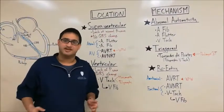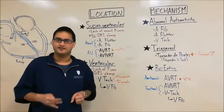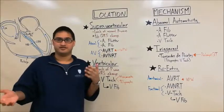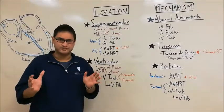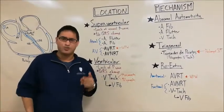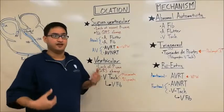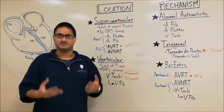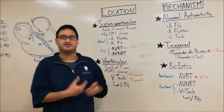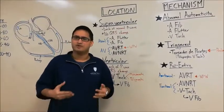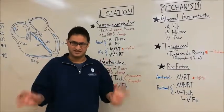So now that we discussed normal conduction in the heart, let's talk about abnormal conduction in the heart. Arrhythmias. So there's two overall schemes to classifying arrhythmias. We can classify arrhythmias by the location of the arrhythmia, the location where the impulse is generated. Or we can classify arrhythmias by the mechanism by which the arrhythmia is generated. And right now we're going to discuss both systems of classification.